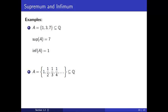What do you think the sup of A will be? What is the least upper bound? The sup of A is 1. What about the infimum? The infimum of A, the greatest lower bound, is 0.